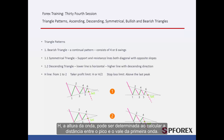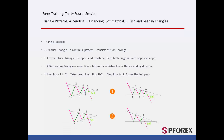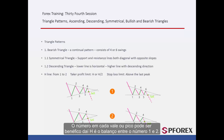H, or wave height, can be determined by calculating the distance between the peak and the valley of the first wave. The number on each valley and peak can be beneficial, thus H is the swing between number 1 and 2.